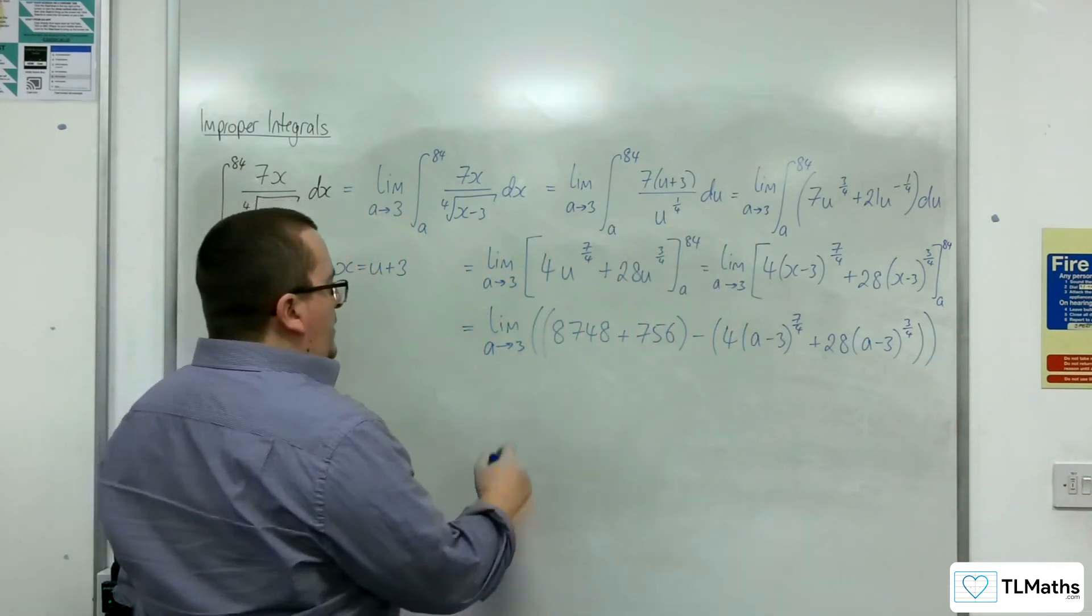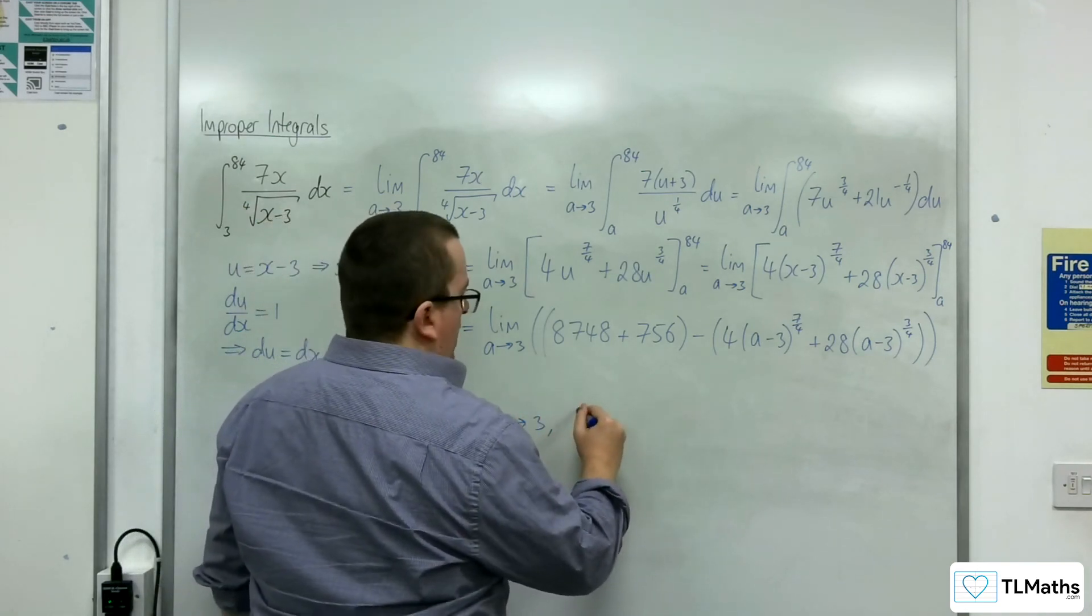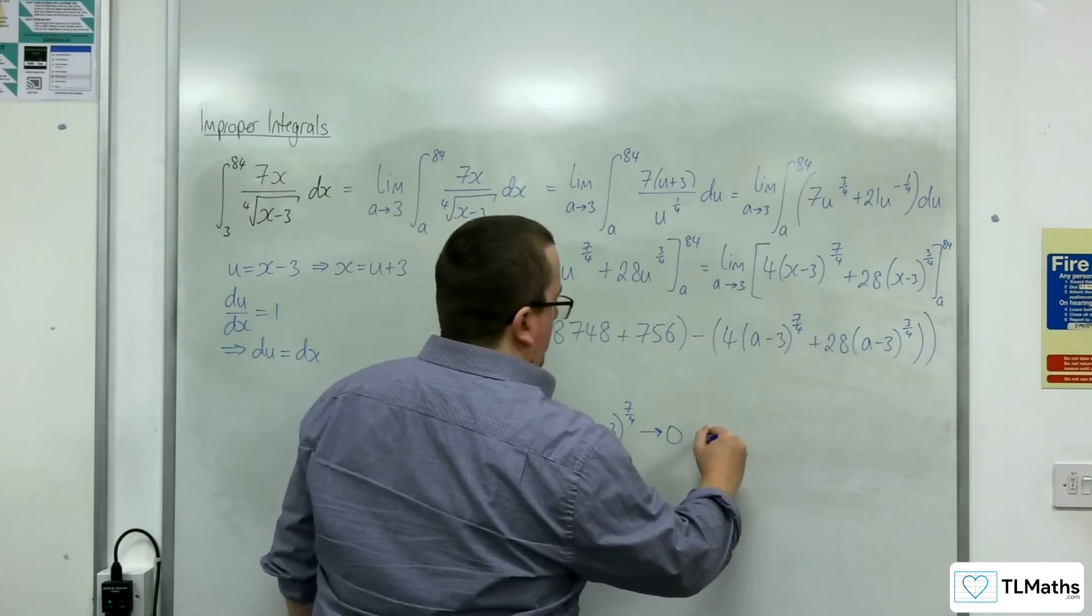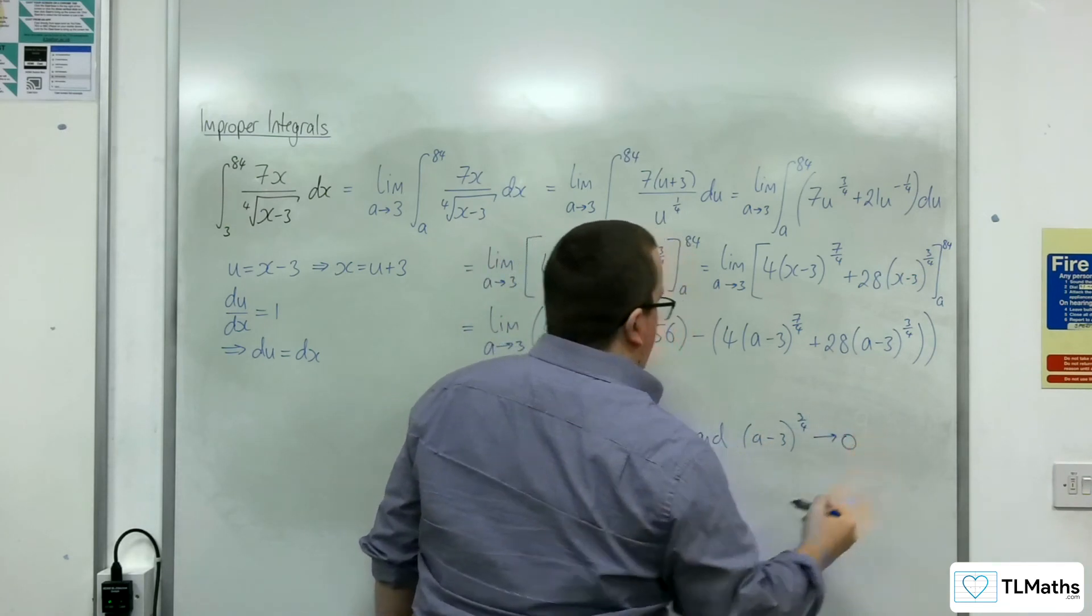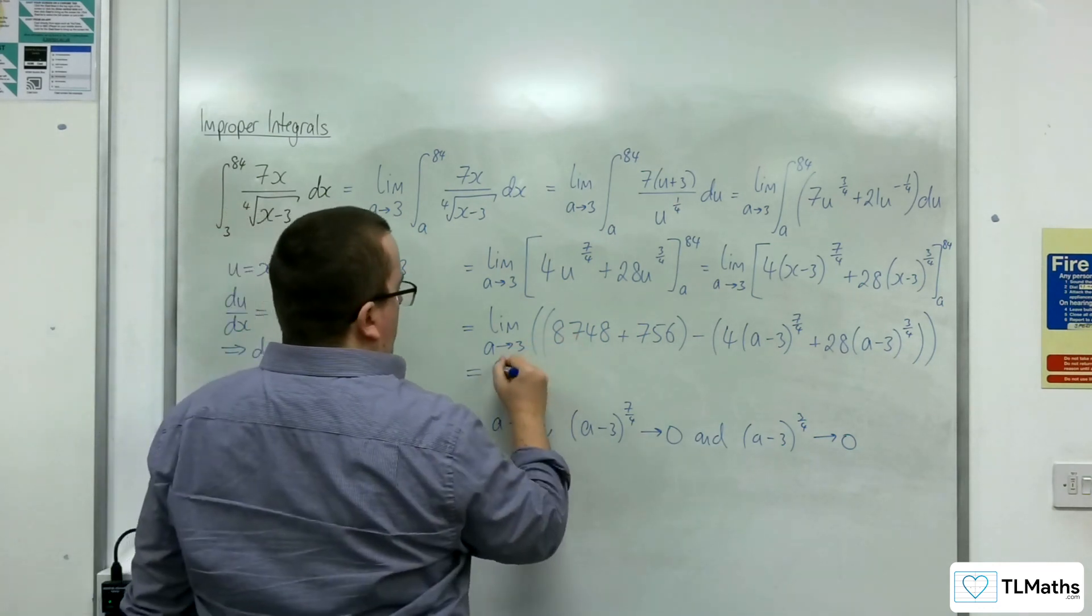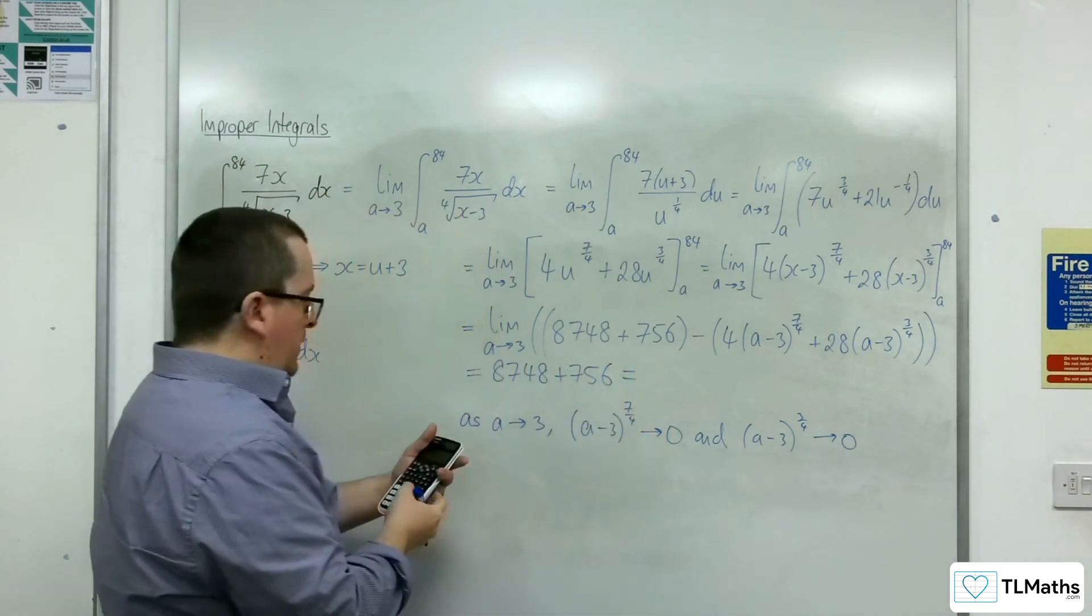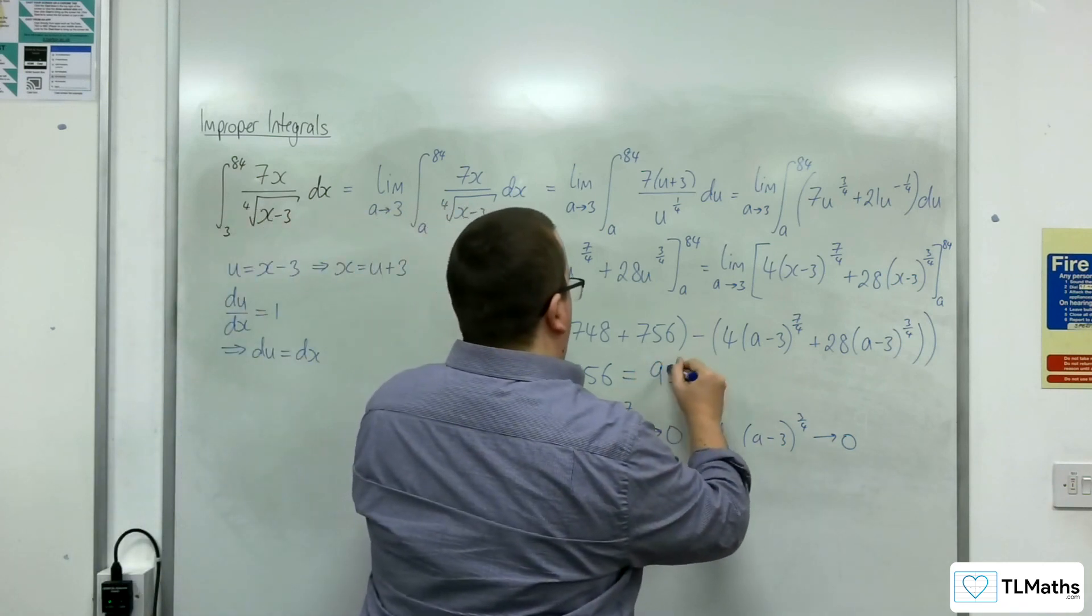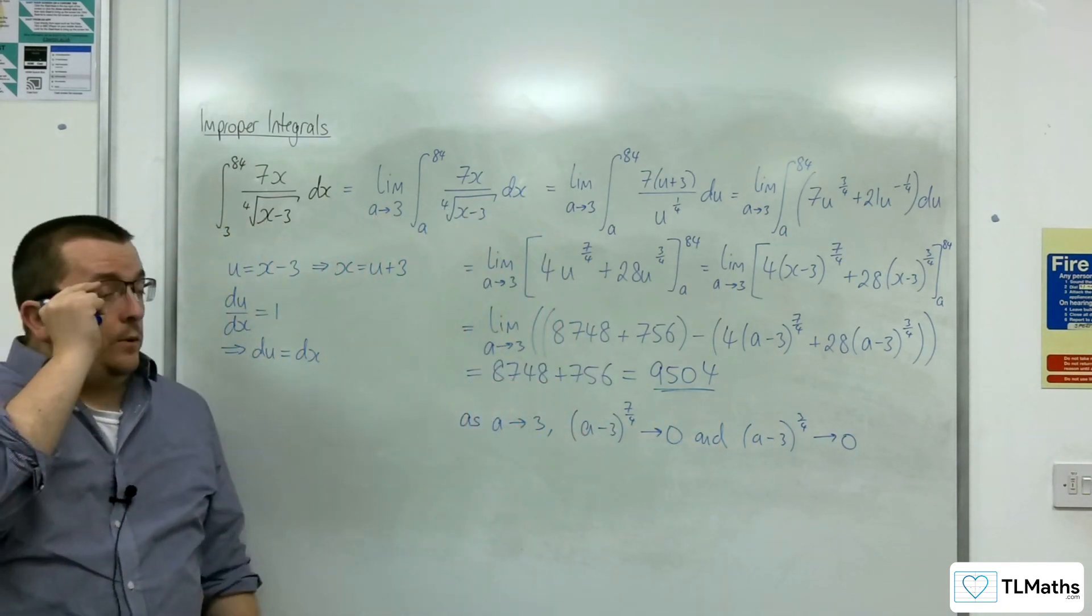So what we need to recognise is that as a tends to 3, a minus 3 to the 7 quarters tends to 0, and a minus 3 to the 3 quarters tends to 0. So this limit is just equal to 8,748 plus the 756, which is 9,504. And so that is the value of the integral.